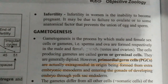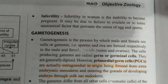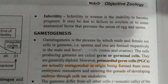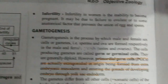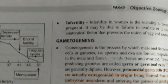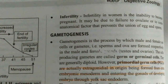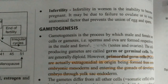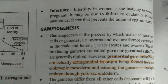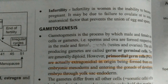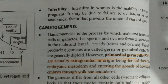Infertility is the inability of the female to conceive. It may be due to failure to ovulate, or sometimes due to anatomical factors in the female reproductive system that prevent the union of egg with sperm. Other disorders include oligomenorrhea — infrequent menstruation; dysmenorrhea — painful menstruation; and amenorrhea — the absence of menstruation altogether.